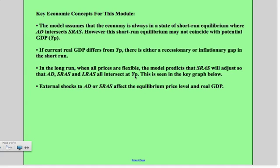Key economic concepts. The model assumes the economy is always in a state of short-run equilibrium where aggregate demand intersects short-run aggregate supply. It doesn't always coincide with potential GDP or Y sub P. If current real GDP differs from potential output, there is either a recessionary or inflationary gap in the short run. In the long run, when all prices are flexible, the model tells us that short-run aggregate supply will adjust so that aggregate demand, short-run aggregate supply, and long-run aggregate supply all intersect at Y sub P, potential output.